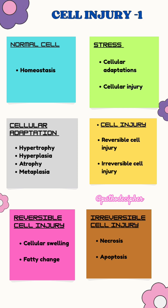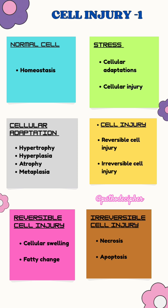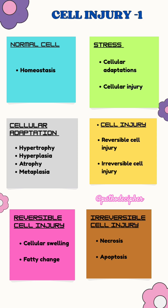In reversible cell injury, again you have two: one is cellular swelling and the other is fatty change. Cellular swelling is mainly due to sodium-potassium pump failure, which leads to accumulation of water within the cell. The other one is fatty change. If the stimulus is not withdrawn from the cell, it will ultimately lead to irreversible cell injury.